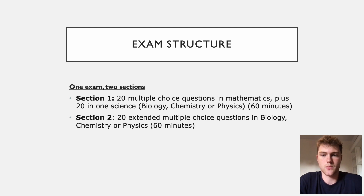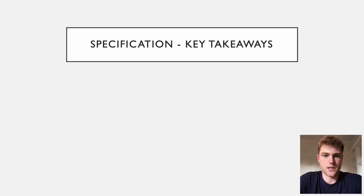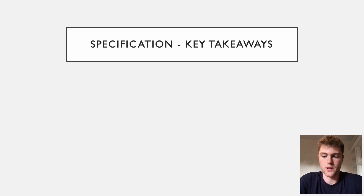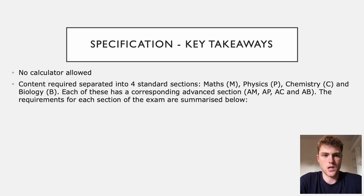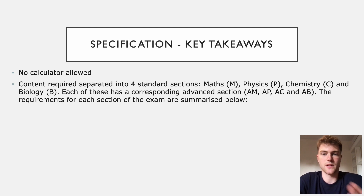Section two has slightly harder questions. The key takeaways from the specification — this can be found online. There's no calculator allowed in either part of this exam, and there are four sections: Maths, Physics, Chemistry, and Biology. These are the standard sections, and for each section there is an advanced section — Advanced Maths, Advanced Physics, Advanced Chemistry, or Advanced Biology — and the requirement for each section of the exam is given below.